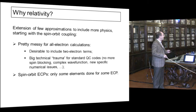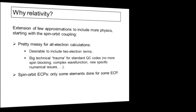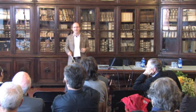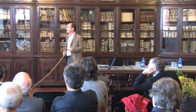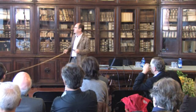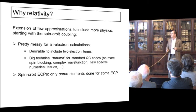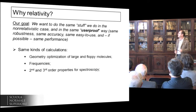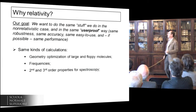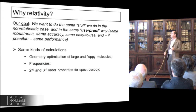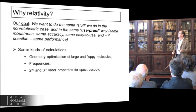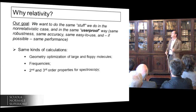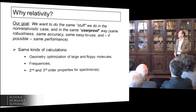Suddenly you no longer have spin blocking, you no longer have real molecular orbitals — everything becomes complex and things start to look very different. There are spin-orbit ECPs, but these are done for some elements and for some combinations of basis functions. Our goal is to do the same stuff we do for the non-relativistic case, in the same user-proof way, with the same robustness, accuracy, and ease of use.